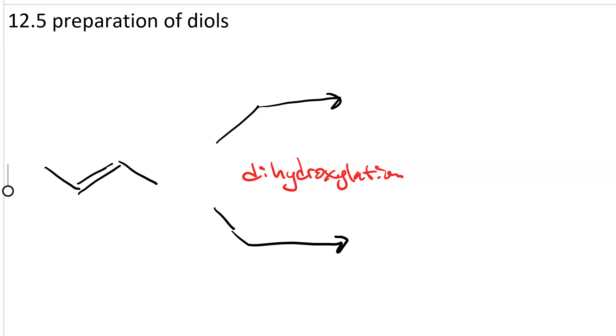So what if you want to make diols? If we do dihydroxylation of an alkene, we can get vicinal diols.